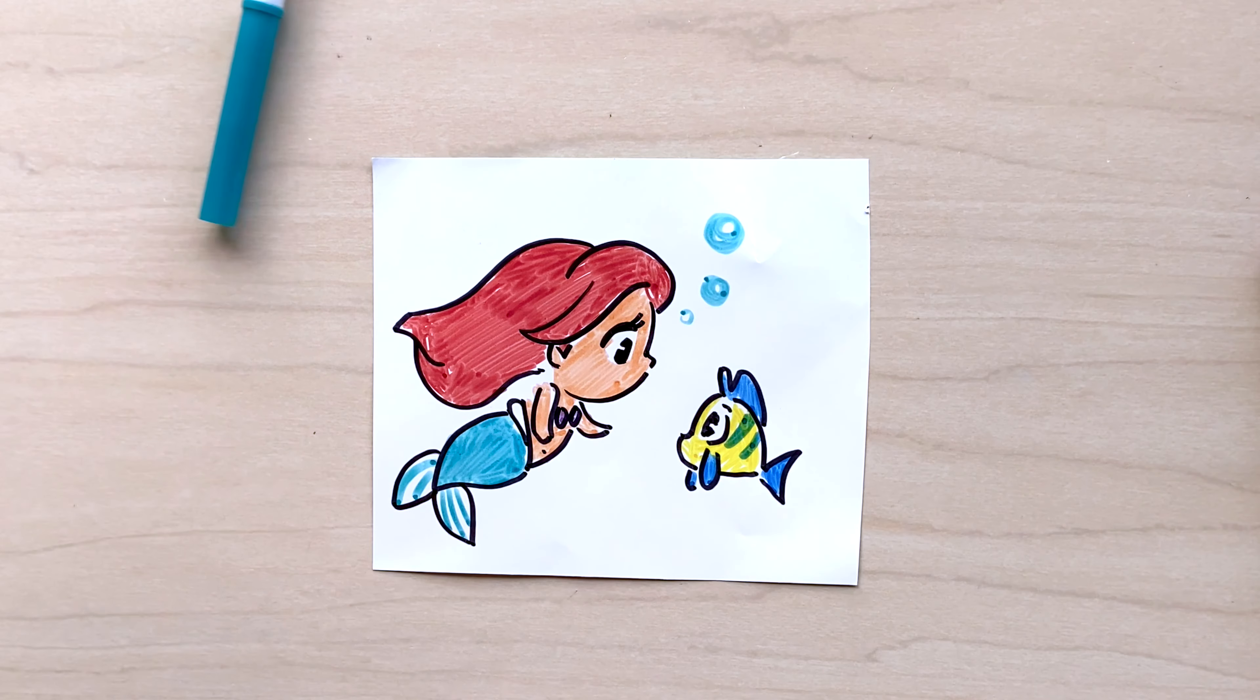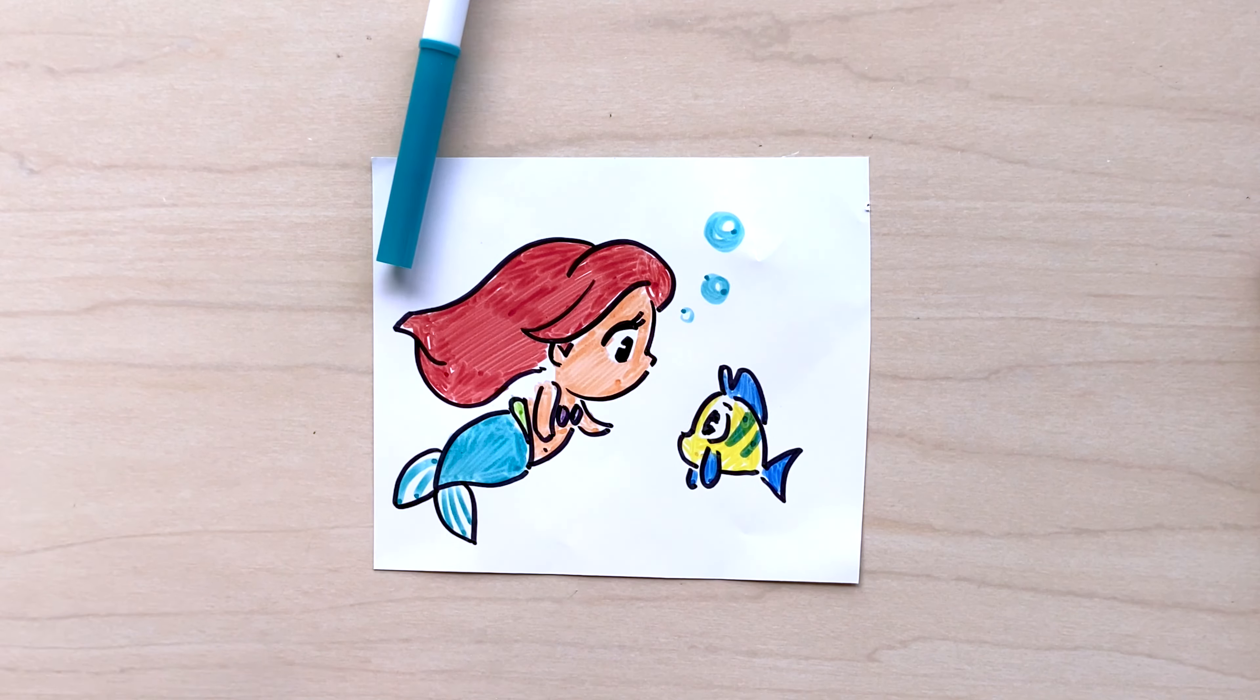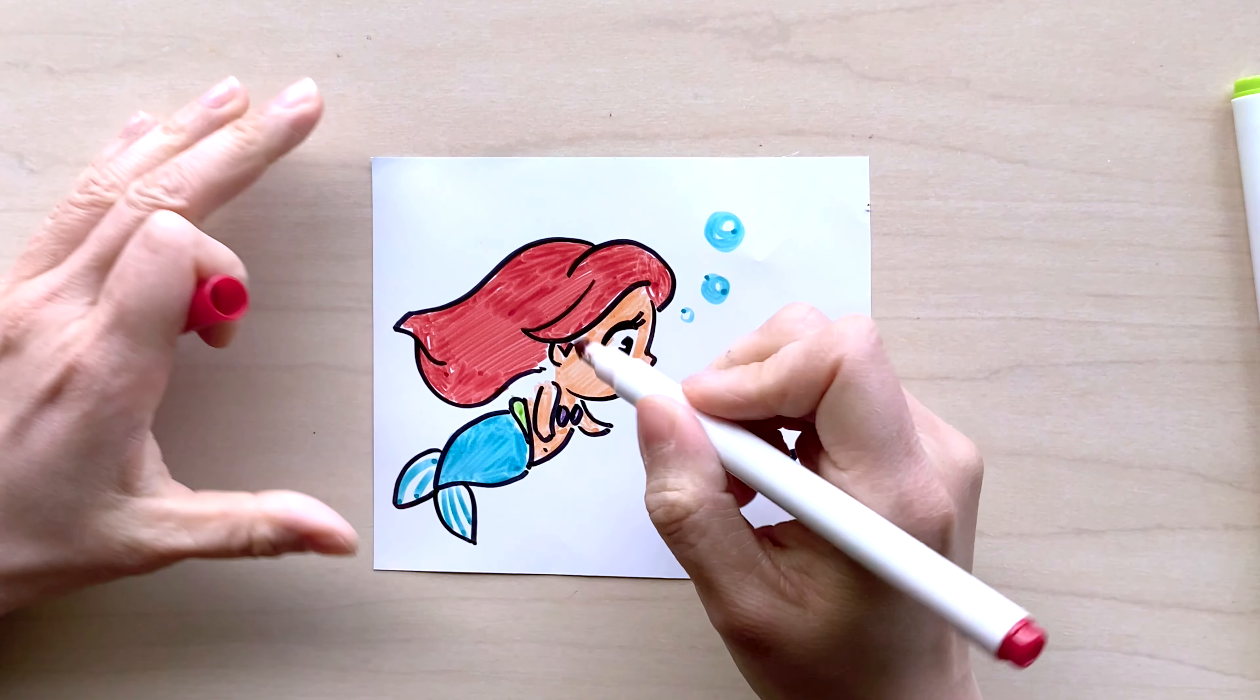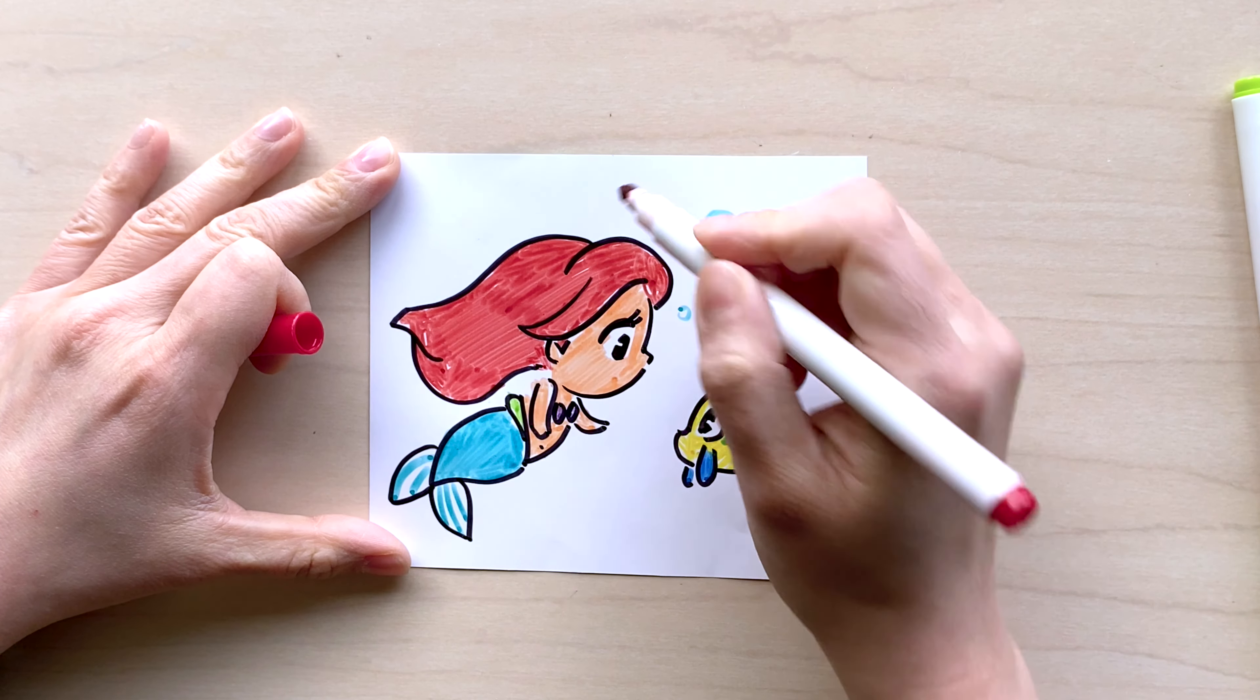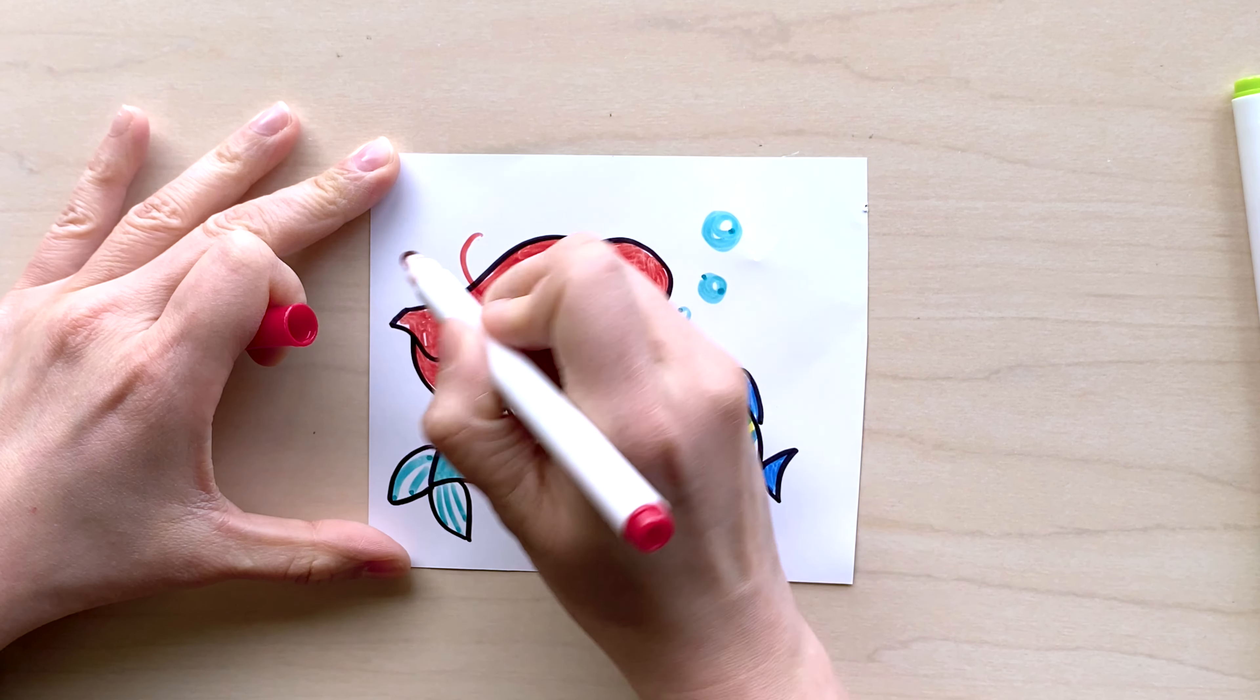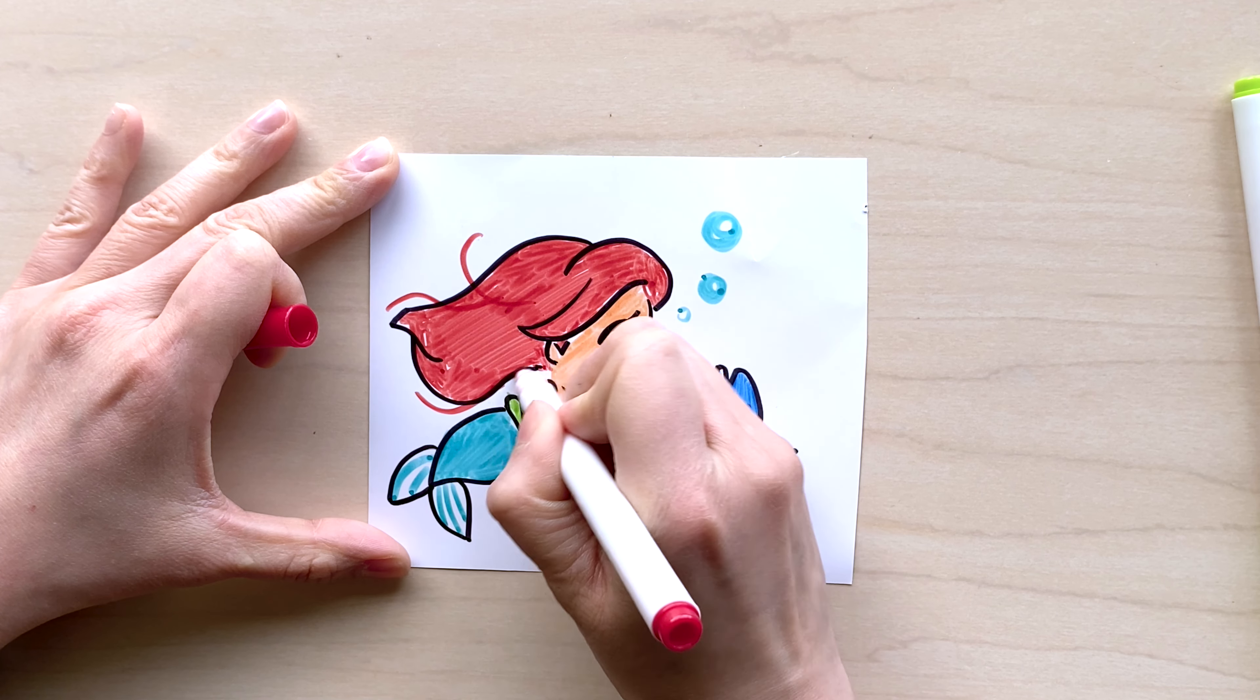So this green I'm using to color in some details for her tail, but feel free if you want to use that same green to draw in some seaweed in the background. For the red markers, I'm going to add in some stray hair for Ariel that's flowing beside her as she's swimming in the water and just talking to Flounder.